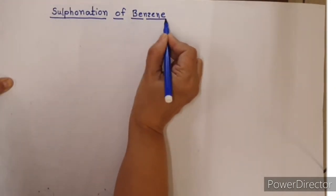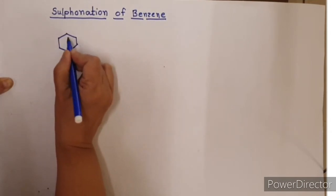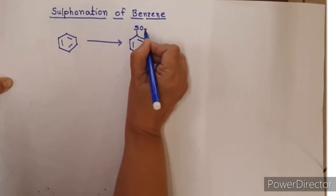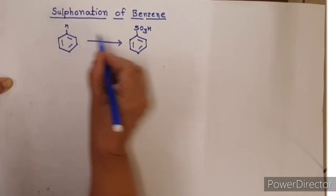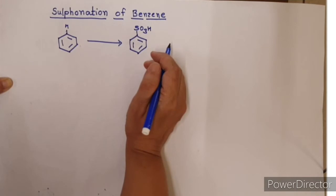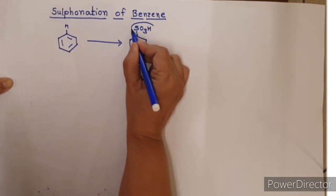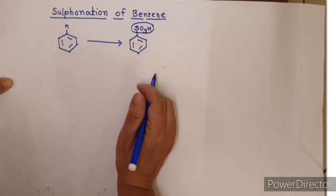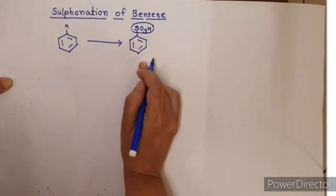You first must know what sulfonation is. I will show you the reaction for sulfonation: benzene to benzene sulfonic acid. One of the hydrogen atoms in benzene is replaced by SO3H group, sulfonic acid group. We can say that introduction of an SO3H group in an aromatic ring is called sulfonation.